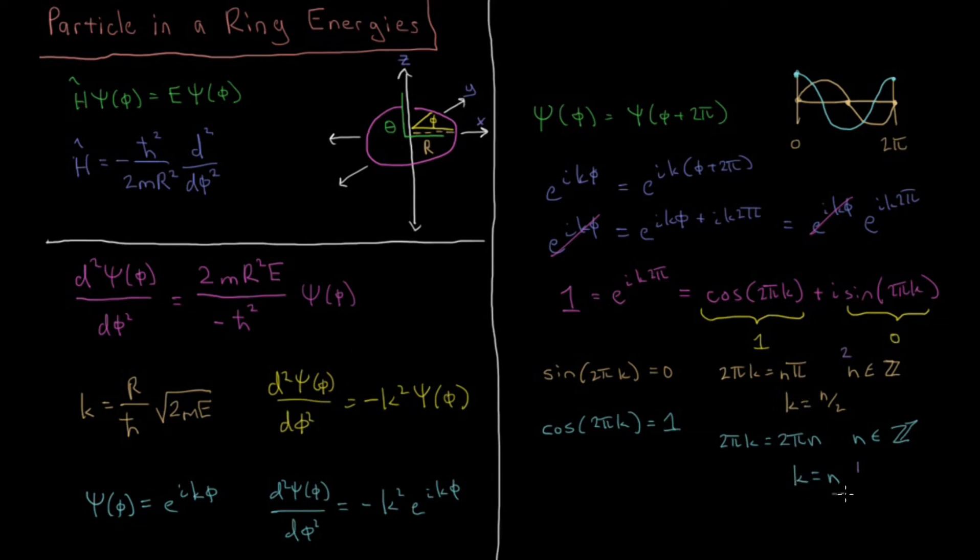So basically we have this restriction that k has to be some integer. So we substitute that back into the value we have up there where we have, so substitute for k, n equals r over h bar times the square root of 2 times me. So if I rearrange this and solve for e, you should be able to convince yourself that the equation you arrive on is that e for a given value of the integer n is going to be equal to h bar squared n squared over 2m r squared.